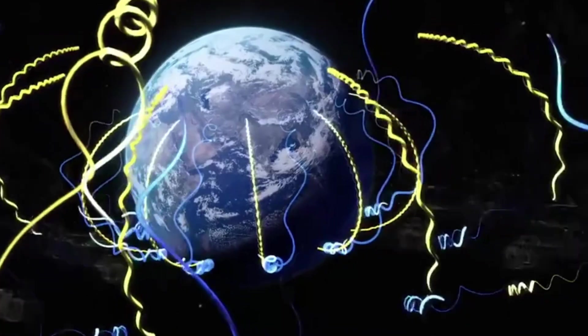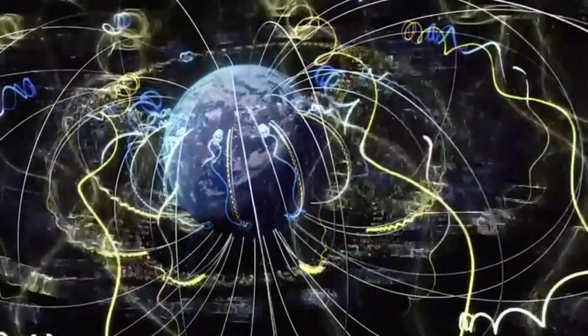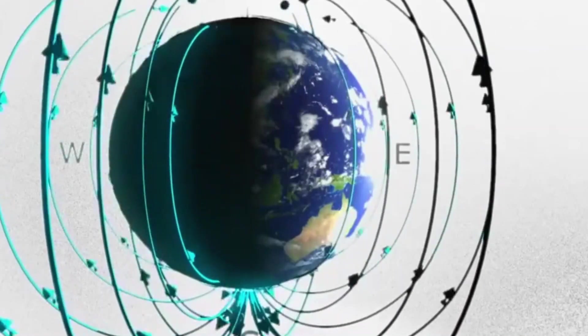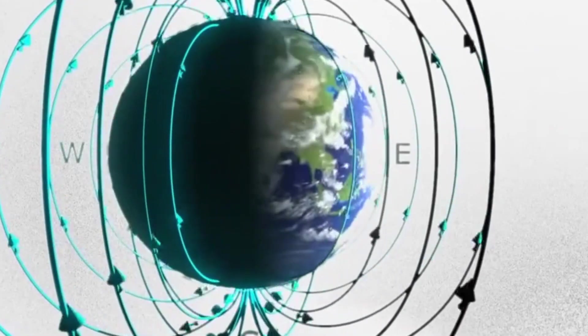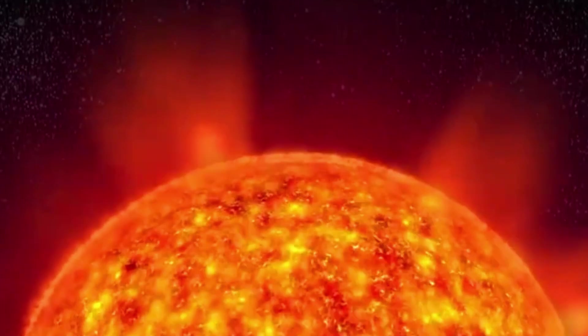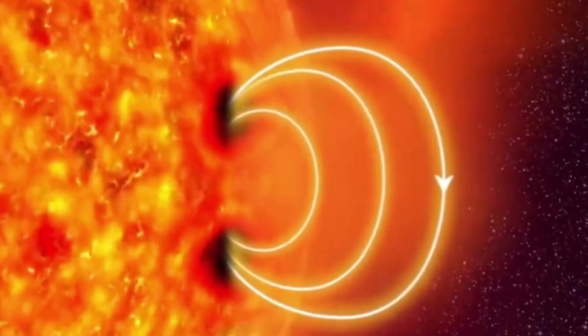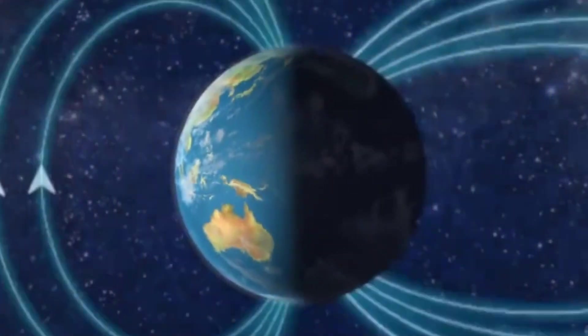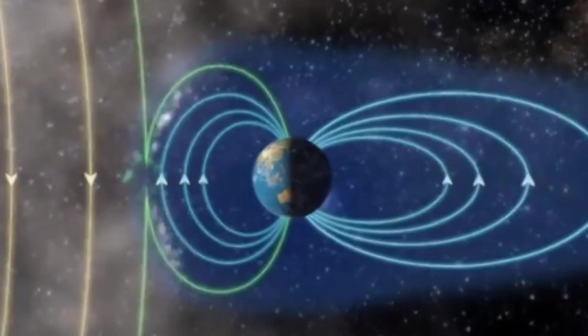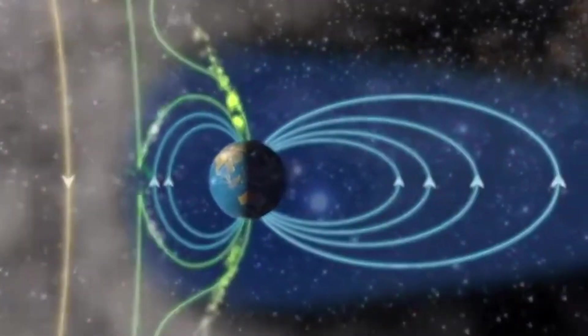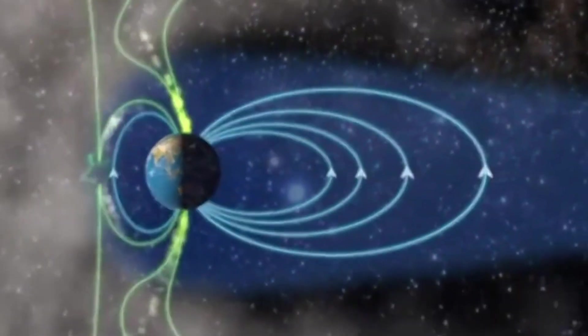What if the invisible shield that protects us from deadly space radiation suddenly collapsed? Scientists believe Earth's magnetic field is already weakening, and the next great magnetic shift may happen sooner than you think. Stay with me till the end, because what I'm about to reveal will change the way you see our planet forever.